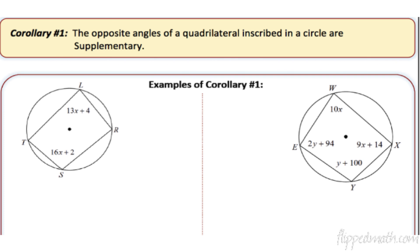Now, a corollary. What is a corollary? Corollaries are very important — they're a direct result of a theorem. The last theorem we just talked about was that inscribed angles are half the measure of the intercepted arc.